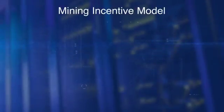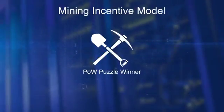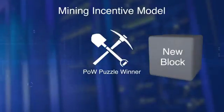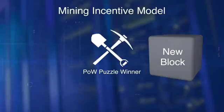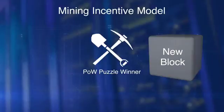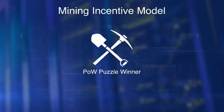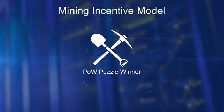Now let's look at the mining incentive model. The proof-of-work puzzle winner, the miner, that creates a new block is incentivized with the base fees of three ethers and the transaction fees in the Ethereum blockchain. The winning miner also gets the fees — gas points — for execution of smart contract transactions.